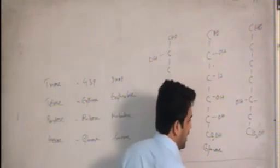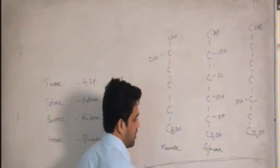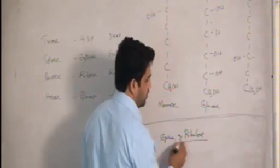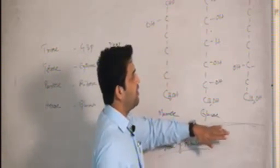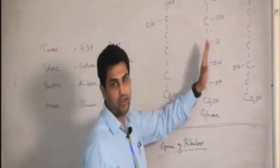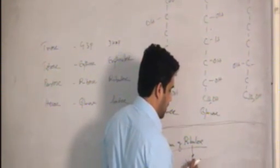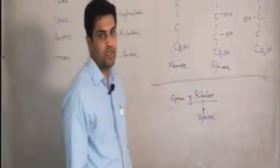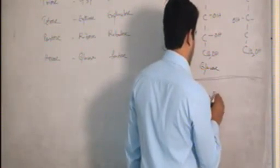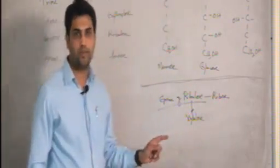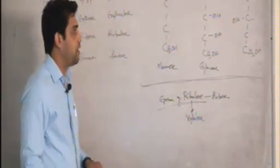A recent trend highlighted in Harper is the epimer of ribulose — expect this in your next exam. Xylulose is the epimer of ribulose, whereas ribose is the isomer of ribulose. So: ribose is the isomer, and xylulose is the epimer of ribulose.